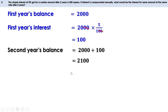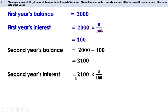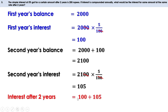Second year's balance is 2000 + 100 = 2100 rupees. Second year's interest is 2100 × 5/100. Cancelling zeros, we get 21 × 5 = 105 rupees. So compound interest after two years is 100 + 105 = 205 rupees.